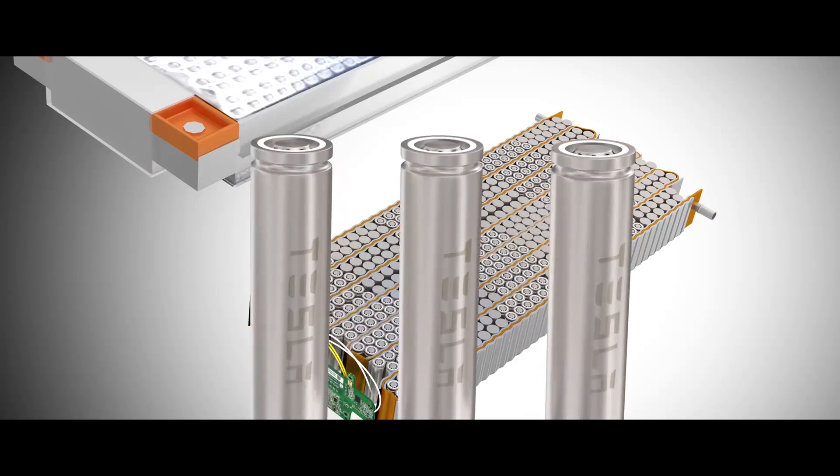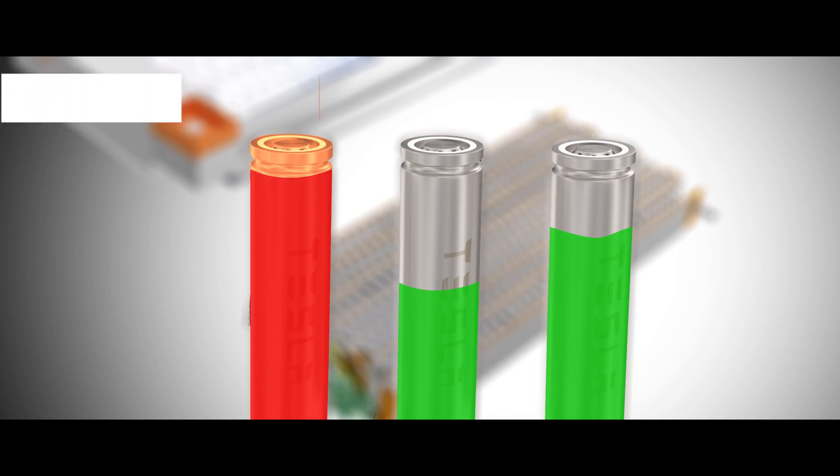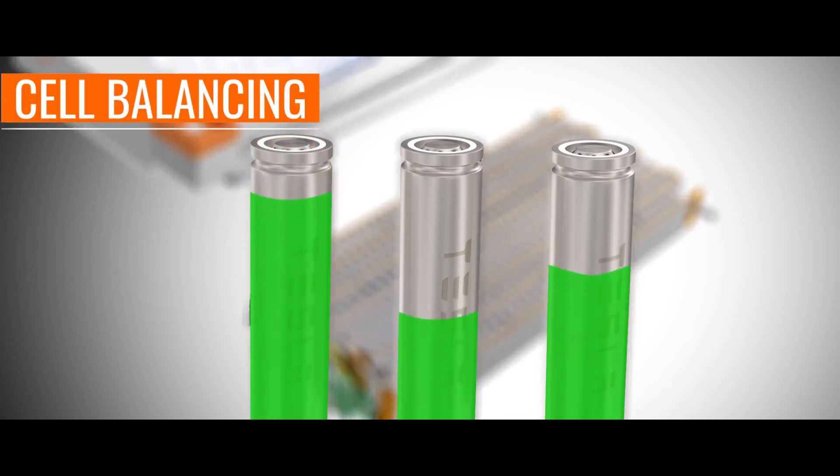Voltage protection is another crucial job of the BMS. For example, in these three cells during charging, the higher capacity cell will be charged more than the rest. To solve this problem, the BMS uses something called cell balancing. In cell balancing, all the cells are allowed to charge and discharge equally, thus protecting them from over and under voltage.